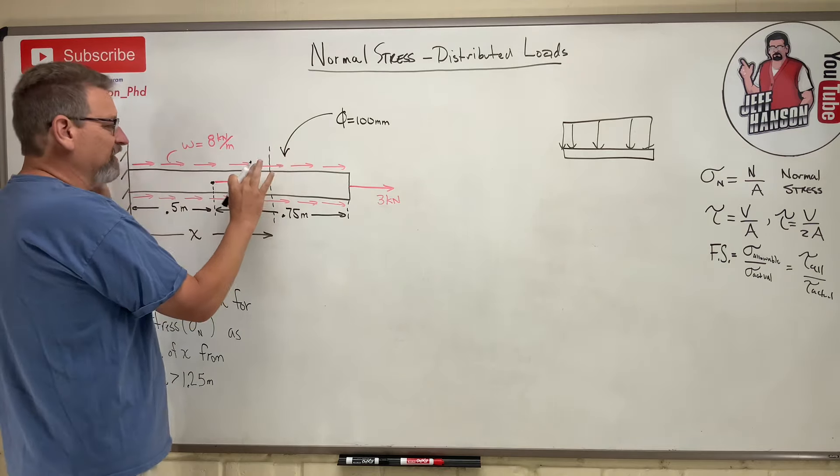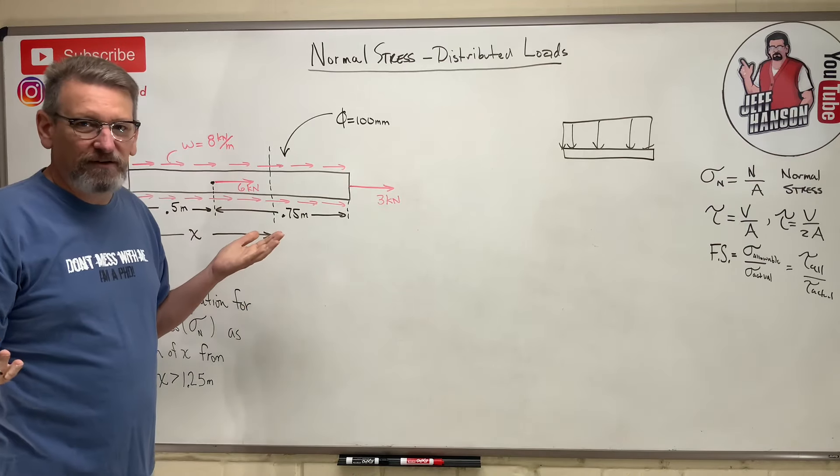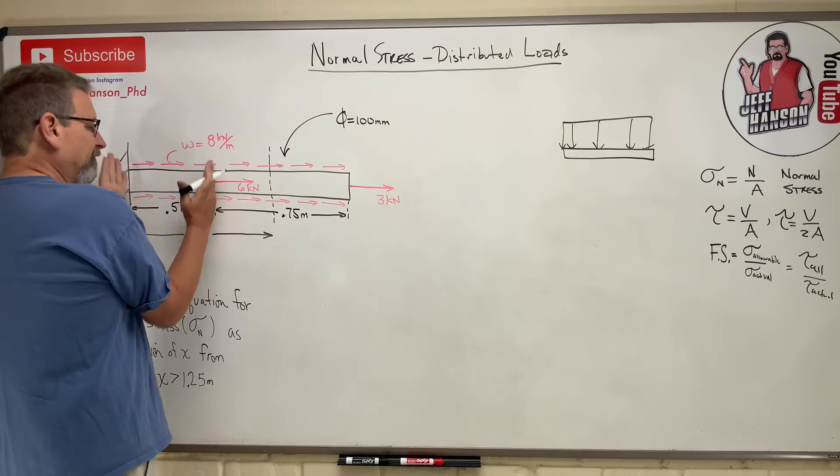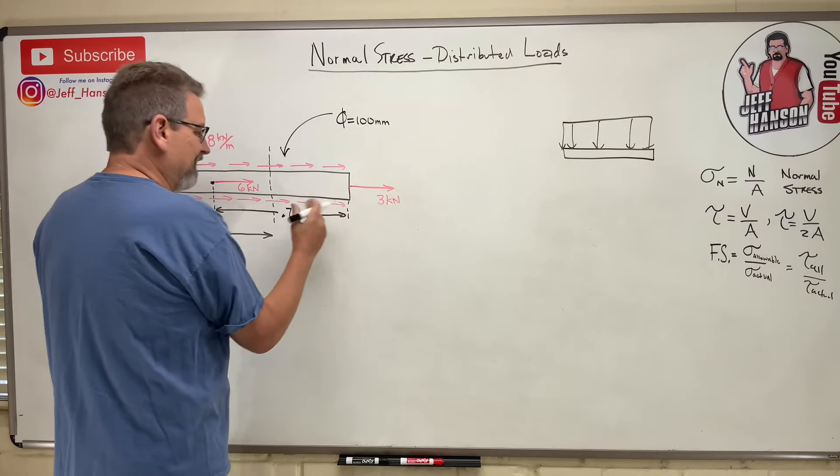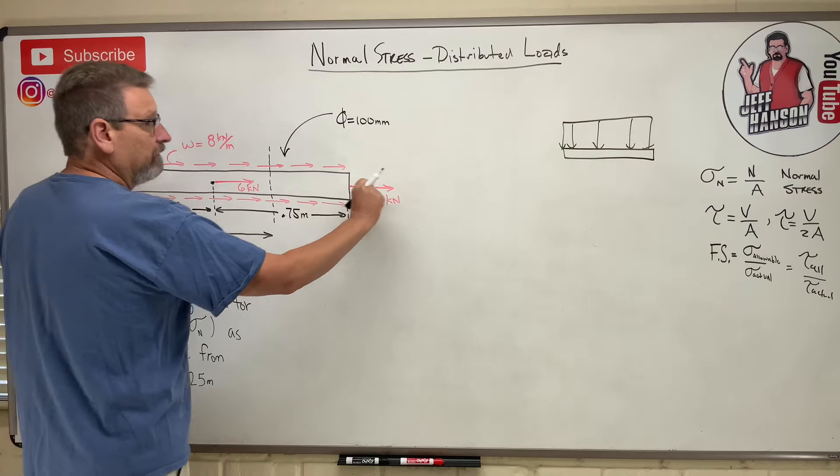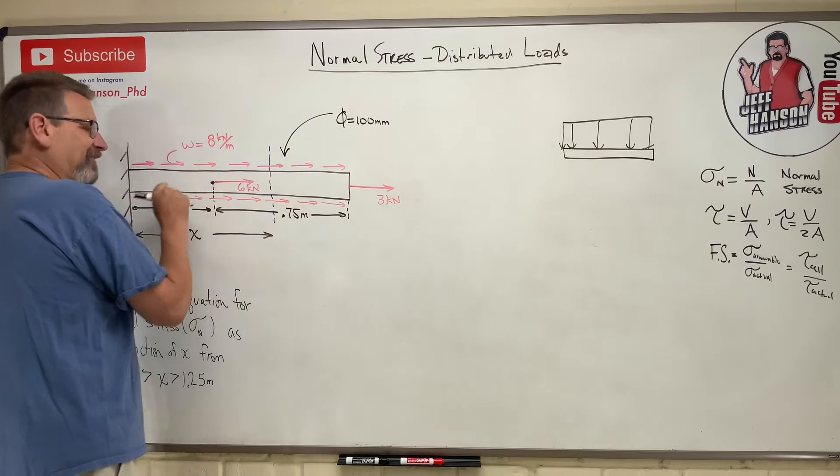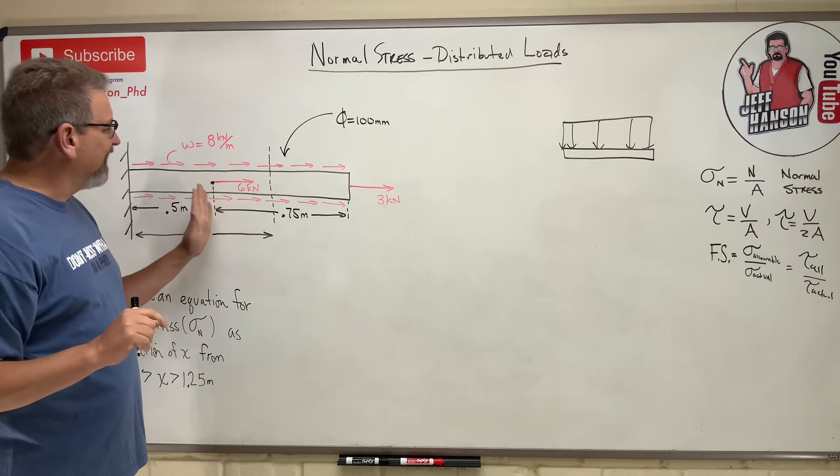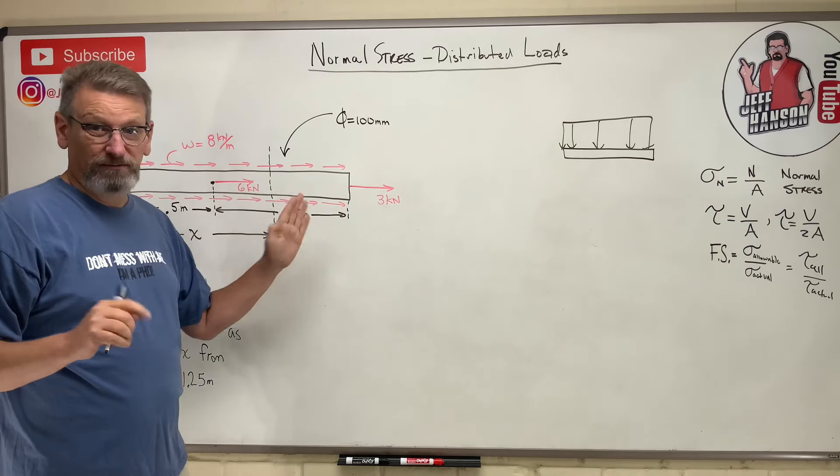then what is that six kilonewtons doing to this side of the rubber band? Nothing. It's just along for the ride. So the six here only affects this portion of the beam, whereas the three, if I add the three to my rubber band, I've got a weight in the middle, when I add that one, the whole thing stretches. So this guy is going to affect this part of the beam and that part of the beam. Does that make sense? So the six actually doesn't affect this part of the beam at all.